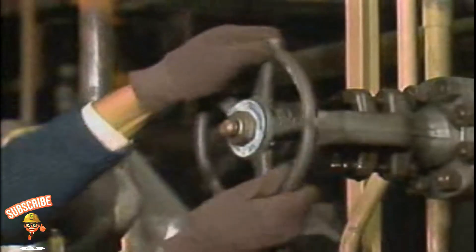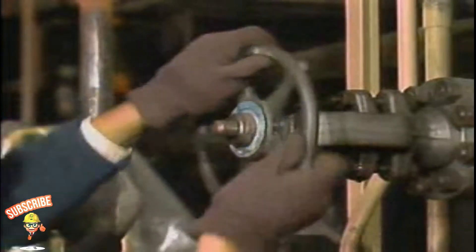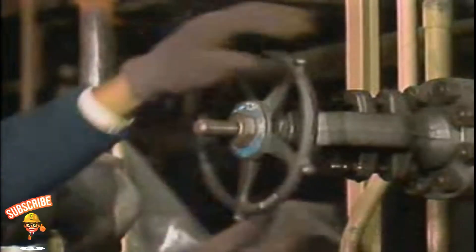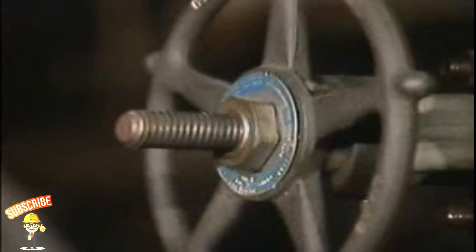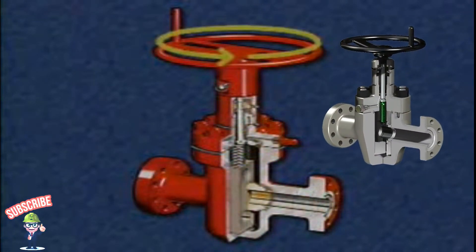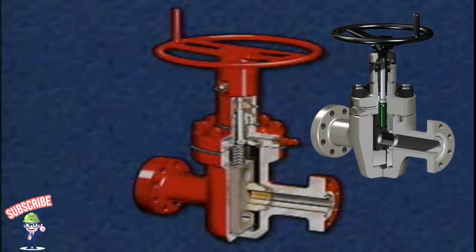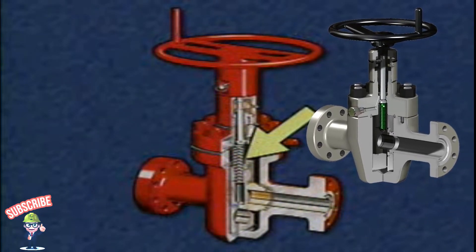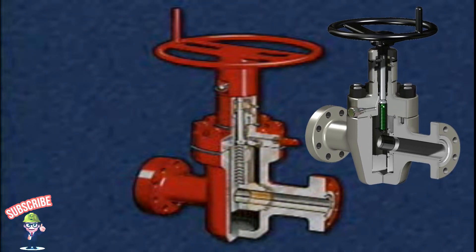Many gate valves have what is called a rising stem. In most cases, the stem rises as the handwheel is turned counterclockwise and lowers when the handwheel is turned clockwise. The amount of stem protruding from the handwheel indicates the position of the disc — if the stem is all the way down, the valve is closed; if the stem is all the way up, the valve is open. On a gate valve with a non-rising stem, the stem and handwheel rotate together. The disc is threaded to the lower portion of the stem and moves up or down the stem as the handwheel is rotated, but the stem does not move up or down.